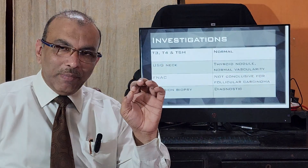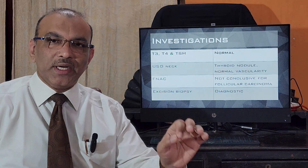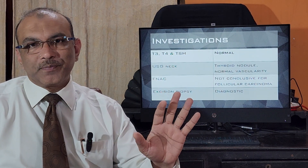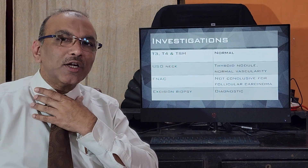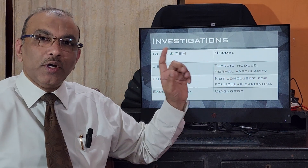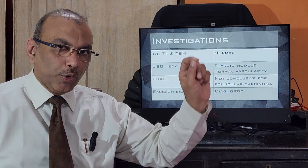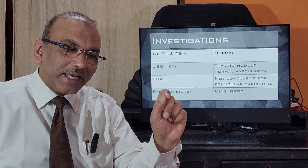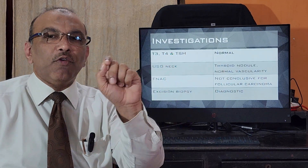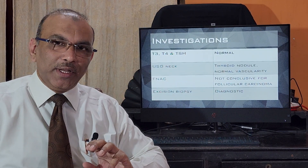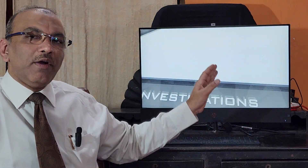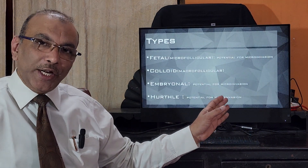We will do a blood test to start with — thyroid function test. T3, T4, TSH will turn out to be normal. When you do an ultrasonography scan, as shown in the diagram before, there will be a nodule. We will take a few cells out of it by doing a fine needle aspiration and send it for histopathological examination. That report will come as one type of follicular adenoma.